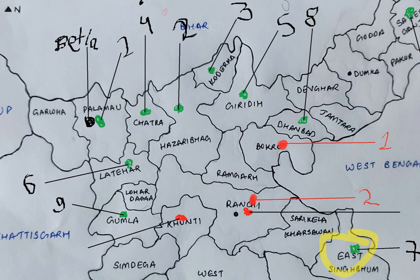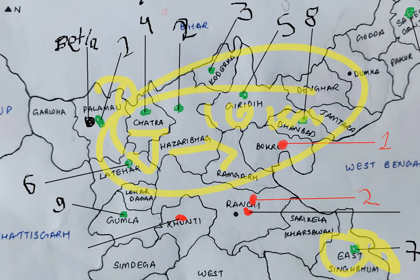Dalma Wildlife Sanctuary is located around the Dalma Hills, again inaugurated by Sanjay Gandhi in 1976, and is about 10 km from Jamshedpur town in Singhbhum.